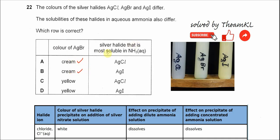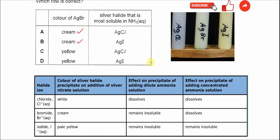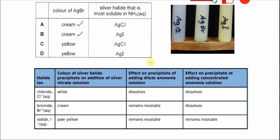For the silver halide that is most soluble in ammonia, you need to memorize this one. Silver chloride can dissolve in dilute ammonia solution and, of course, in concentrated ammonia solution it will dissolve too.